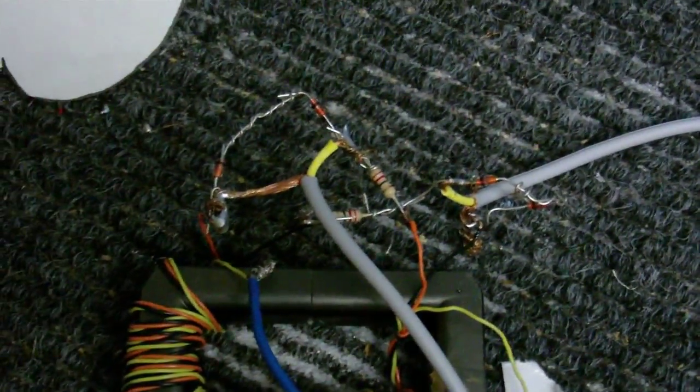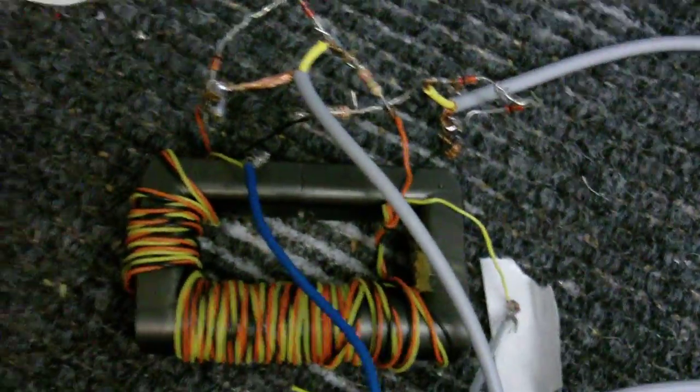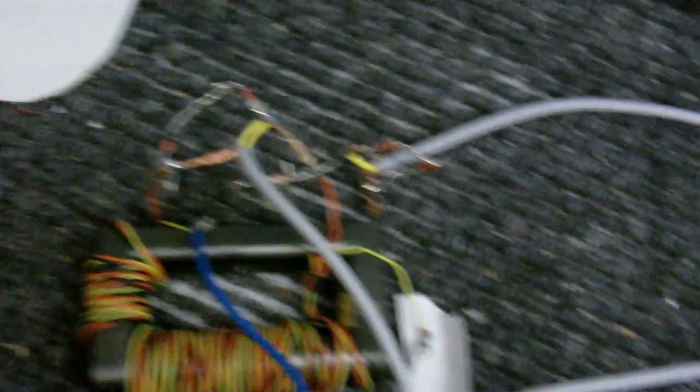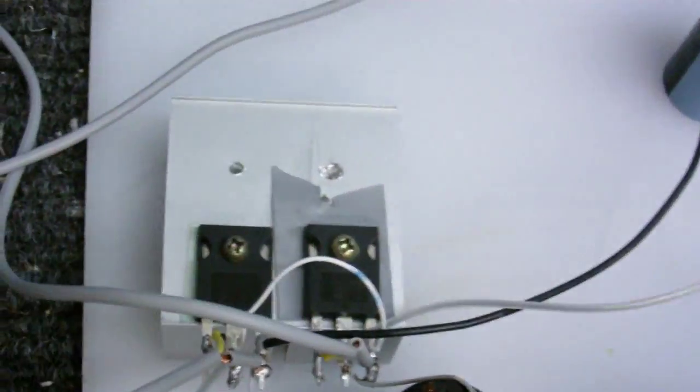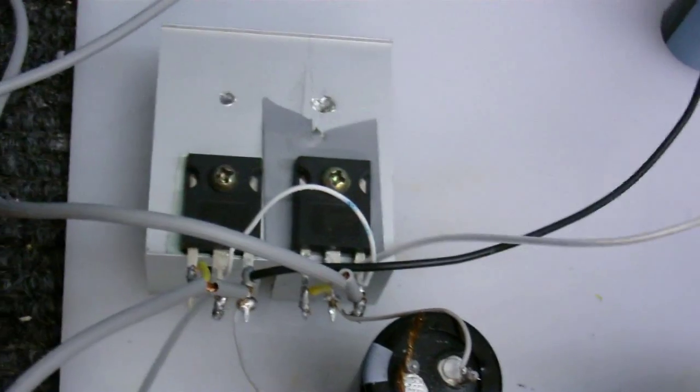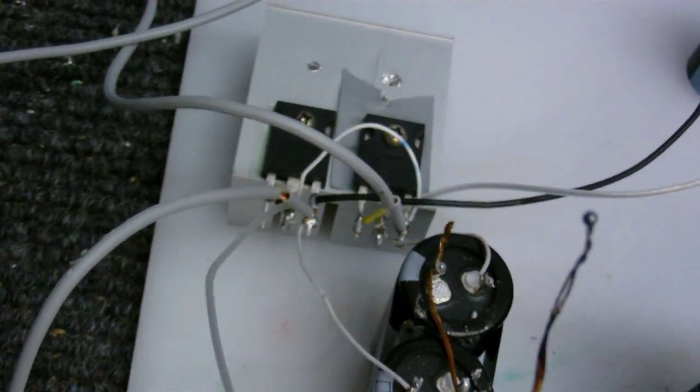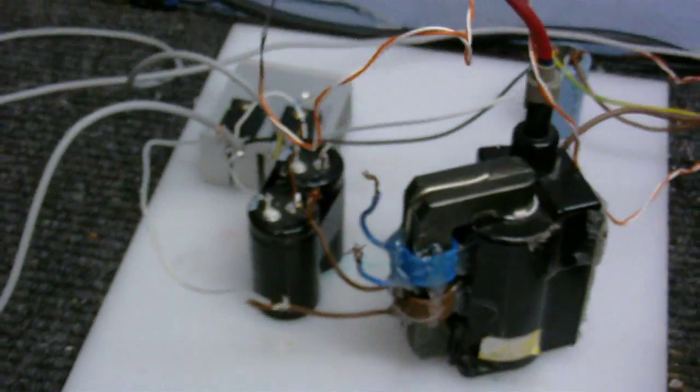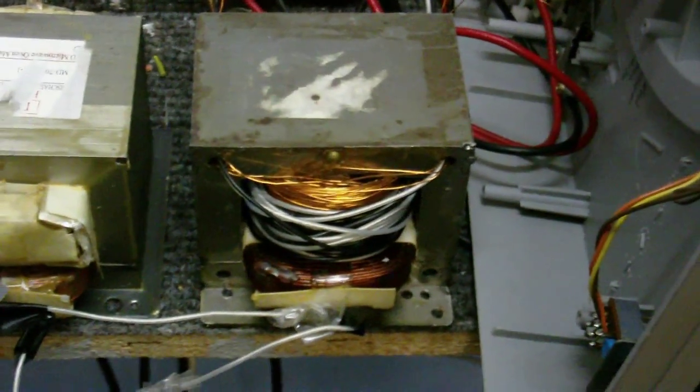Over here we've got the current limiting Zener diodes and 22 ohm resistors to limit the voltage to 12 volts. And that goes to the half bridge itself. And here's the flyback. The primary I use is made out of 6 turns of wire. And the half bridge itself is powered off a modified microwave oven transformer.